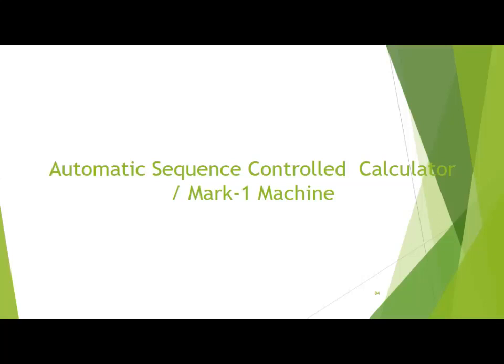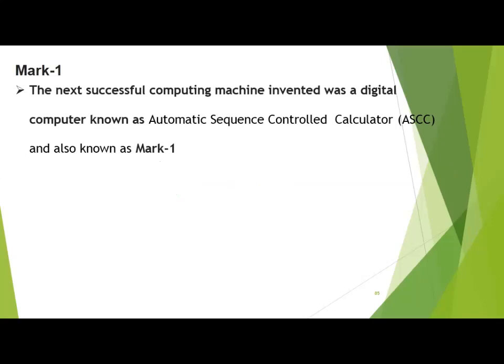Later on, another electromechanical machine was established with the well-known name Mark I, but its actual name was Automatic Sequence Controlled Calculator. This was basically an automatic calculator to perform calculations automatically. The next successful computing machine invented was a digital computer known as the Automatic Sequence Controlled Calculator, also known as Mark I.